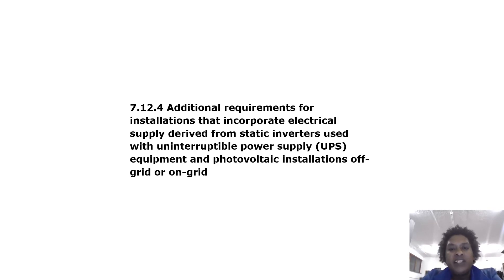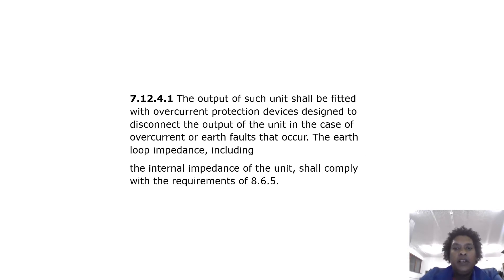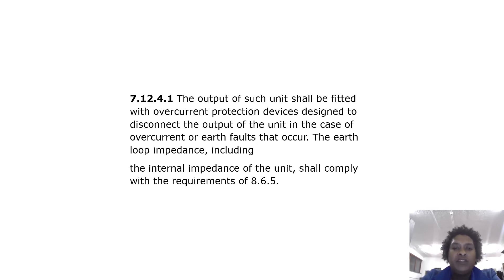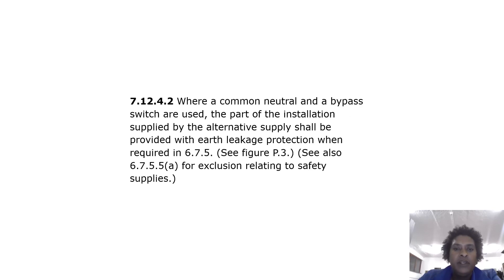Additional requirements for installations incorporating electrical supply derived from static inverters used with uninterruptible power supply equipment and photovoltaic installations (off-grid or on-grid): the output of such units shall be fitted with overcurrent protection devices designed to disconnect the output in the case of overcurrent or earth faults. The earth loop impedance including the internal impedance of the unit shall comply with the requirements of 8.6.5. Where a common neutral and bypass are used, the part of the installation supplied by the alternative supply shall be provided with earth leakage protection where required.